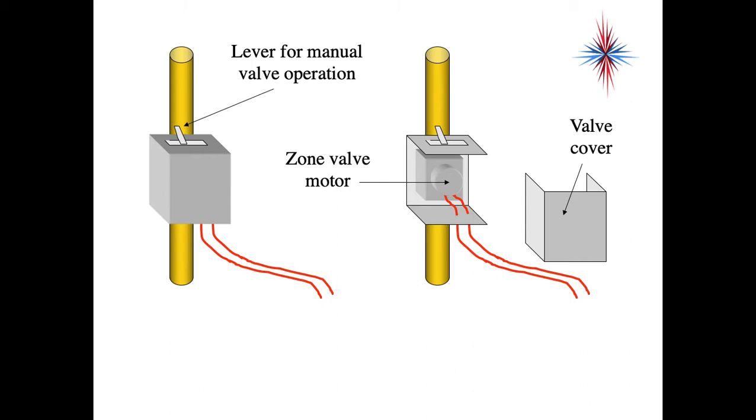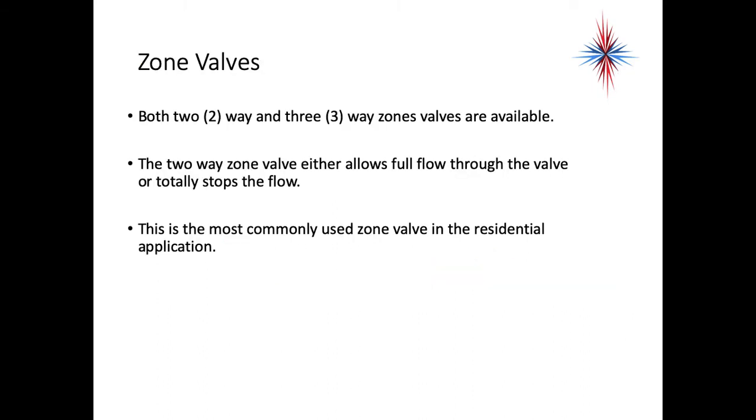As I said, with the zone valve, with the motorized ones, the Honeywell type, you have a lever for manual operation. Inside the valve cover, you have a motor and usually a bunch of gears. Both two-way and three-way zone valves are available. A two-way zone valve either allows full flow through the valve or totally stops the flow. This is most commonly used valve in residential applications, is the two-way valve. It's either open or closed.